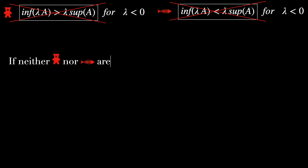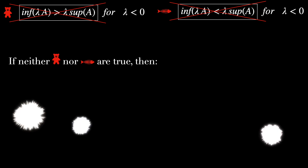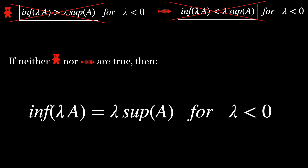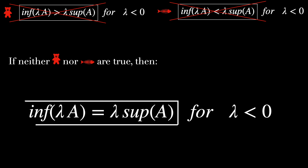Conclusion: if neither the teddy bear nor the fish inequalities are true, then the infimum of lambda A must equal lambda times the supremum of A, for lambda less than 0.